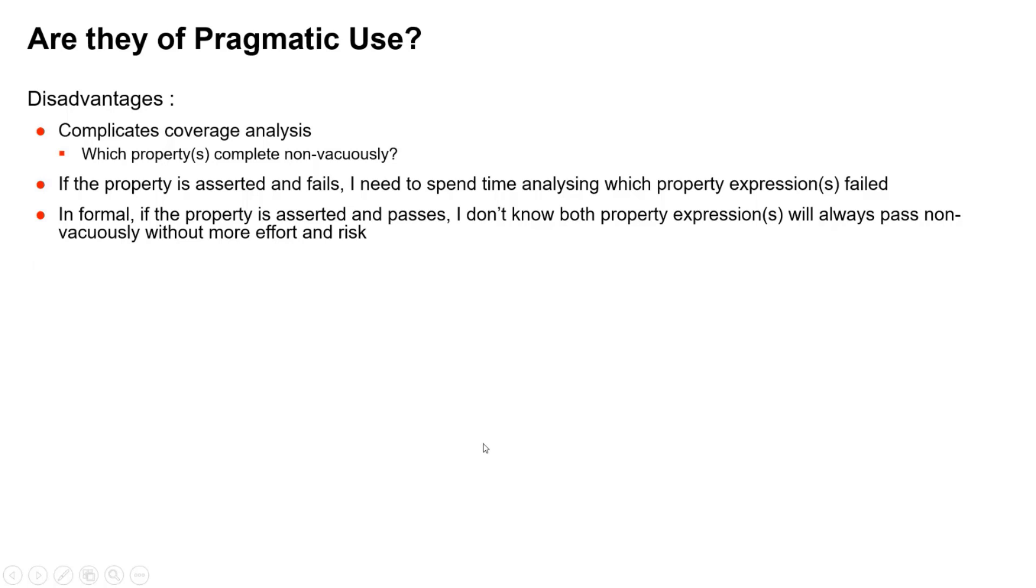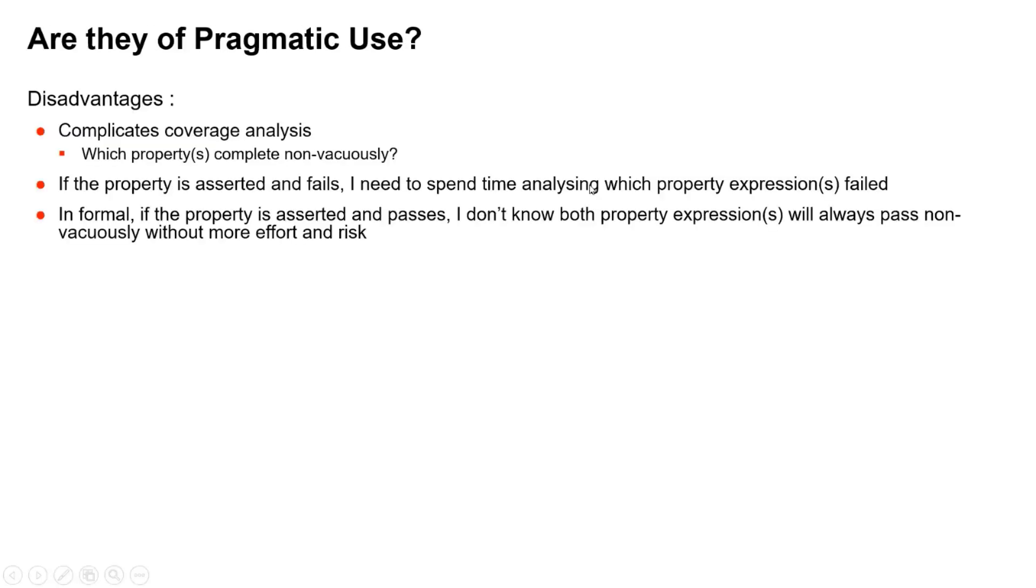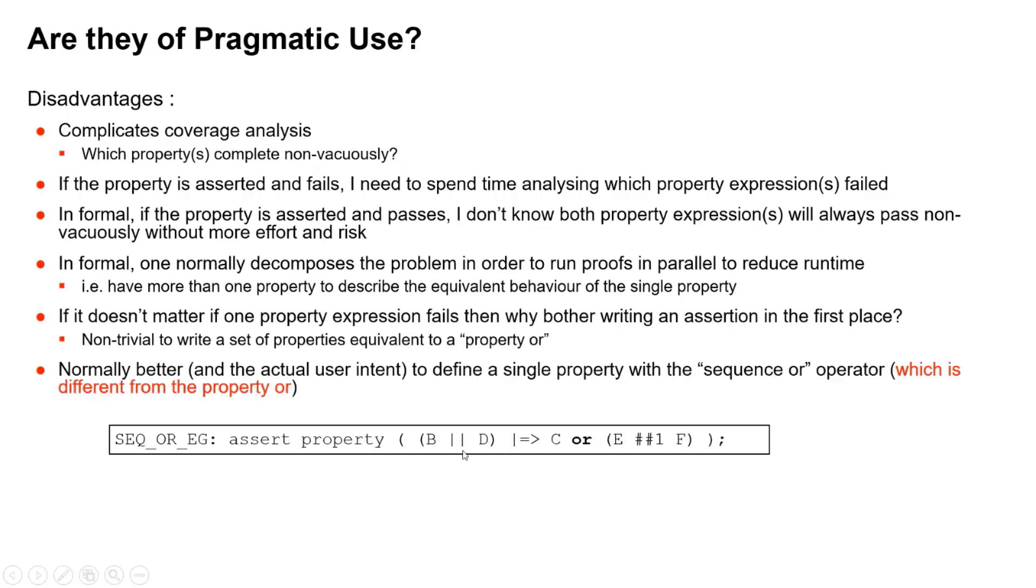So this is not equivalent to the OR that we had previously, by the way. Just go back here—I'm not saying that's equivalent to this. It's not, because as I said, it's non-trivial to express that. But this is the kind of thing people normally mean. If we have B or D on the left-hand side, then this implies we see either that sequence C or this sequence E followed by F. That's normally what people meant.